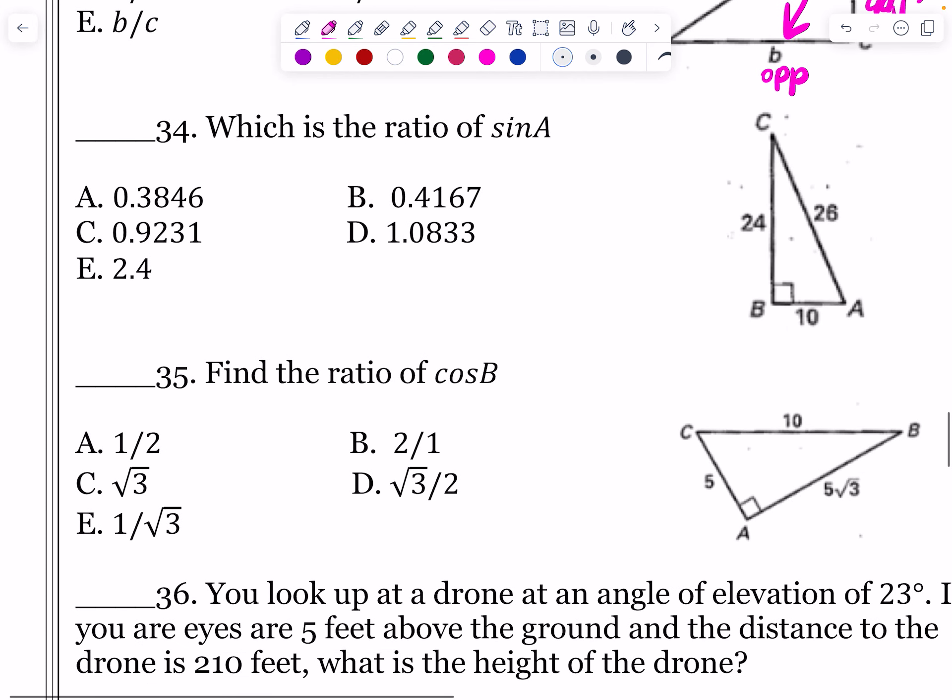What is the ratio of the sine of A? So from A's perspective, sine is always opposite over hypotenuse. So what's opposite A? 24. So it's going to be 24 over hypotenuse. Hypotenuse is going to be 26. So remember that ratios are always fully reduced. 24 over 26 is going to be, you can simplify this, 24 over 26 is going to be 12 over 13. We want to actually type that in. So instead of just the ratio, we're just finding the actual value. 12 divided by 13.